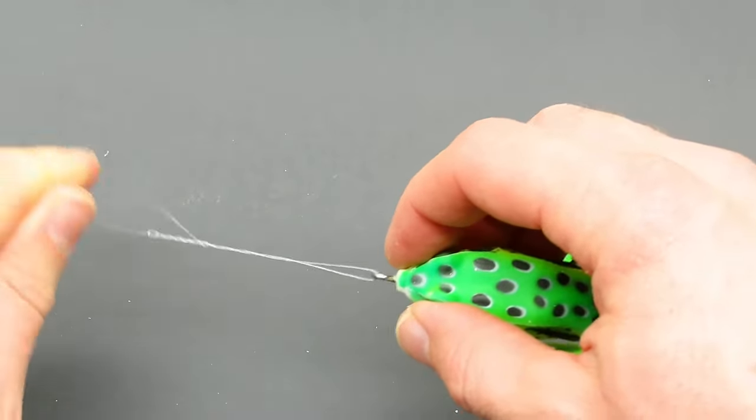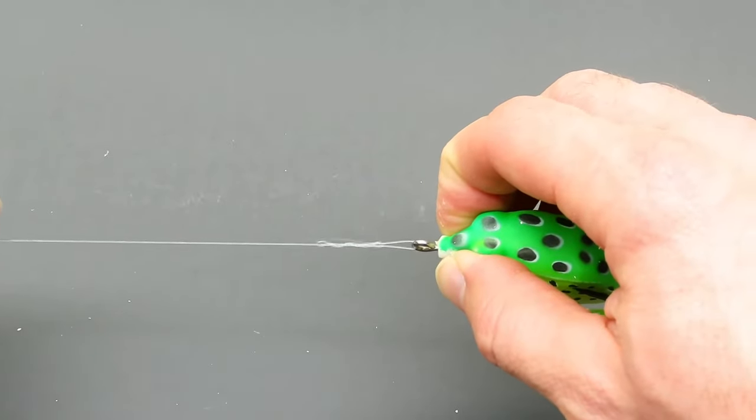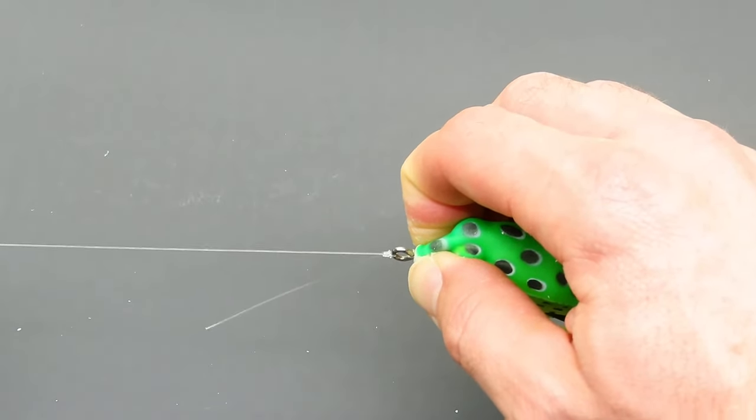Once you've lubricated it you can just pull on the main line. The knot will slide down to the lure and cinch itself down.